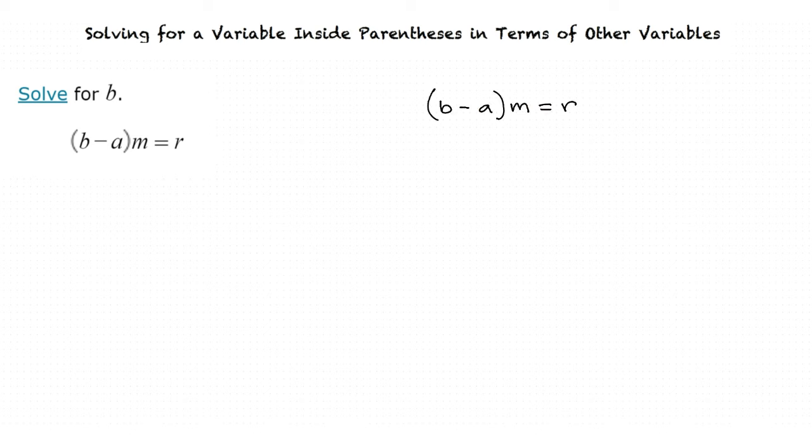Okay, to start off, we should move m over from the left side to the right side by dividing both sides by m. Now, since the left side just has the expression in the parentheses, we can erase those. And now we can add a to both sides, which means our final answer will be b equals r divided by m plus a.